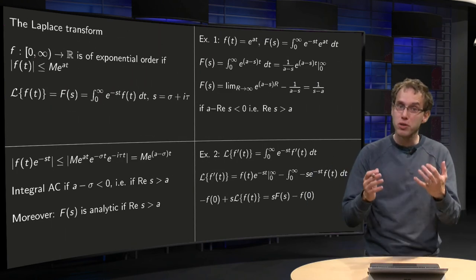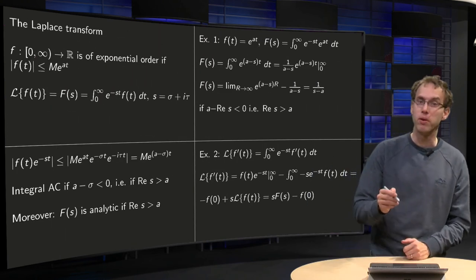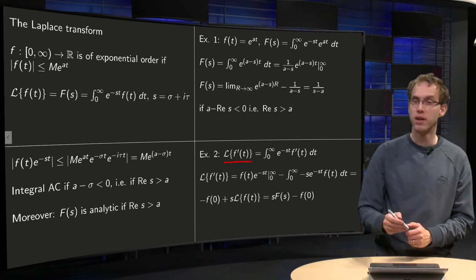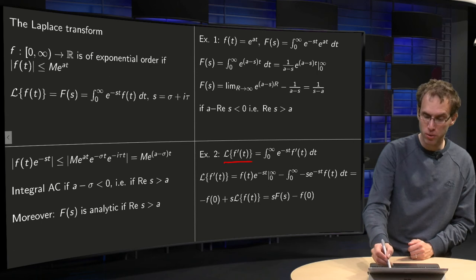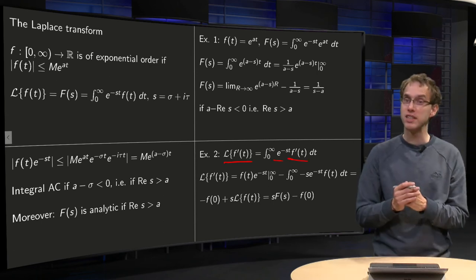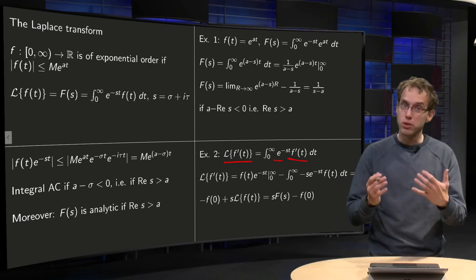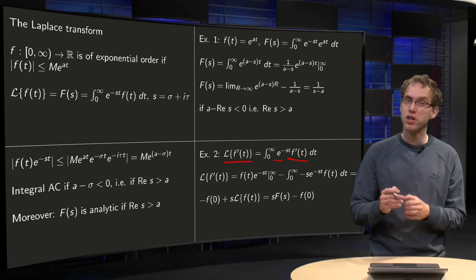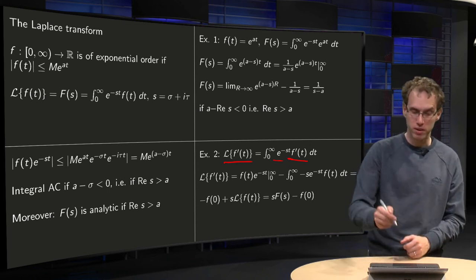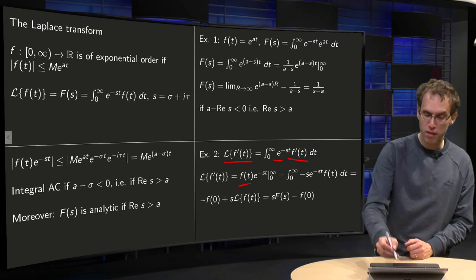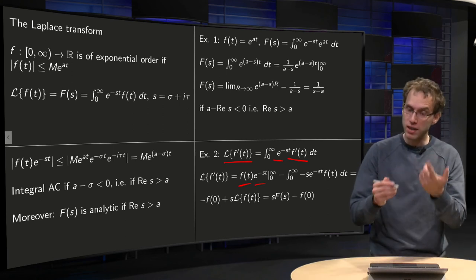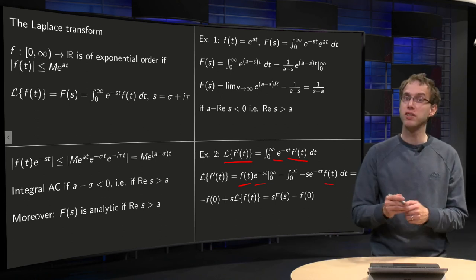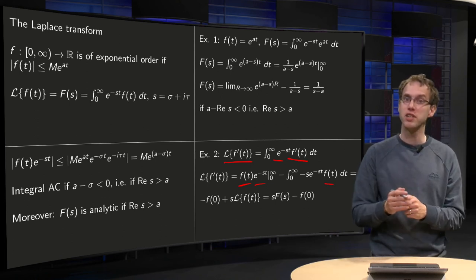So what happens to derivatives, let's do another example, the Laplace transform of F prime. What happens if you try to compute that? Well you get your integral, now F prime times e^(-st) dt. You use integration by parts, so first you integrate your F prime, that yields your F times e^(-st) between the boundaries minus.